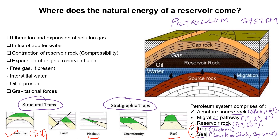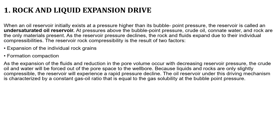The natural energy of a reservoir may come from: liberation and expansion of solution gas; influx of active formation water; contraction of reservoir rock via compressibility; expansion of original reservoir fluids such as free gas, interstitial water, connate water, or oil; and gravitational force due to density differences.